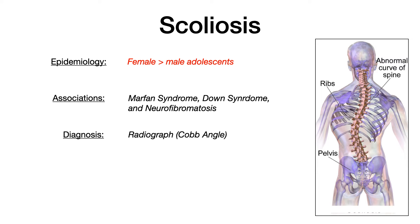As far as epidemiology goes, females are much more likely to be affected by scoliosis than males, and the peak onset is in adolescence. While there are reports of it occurring into early adulthood, it is highly likely to be diagnosed in adolescence. Scoliosis is associated with Marfan syndrome, Down syndrome, neurofibromatosis, and muscular dystrophy. To diagnose scoliosis, you want to get a radiograph, which allows you to calculate the Cobb angle — we'll discuss what that means and its implications shortly.